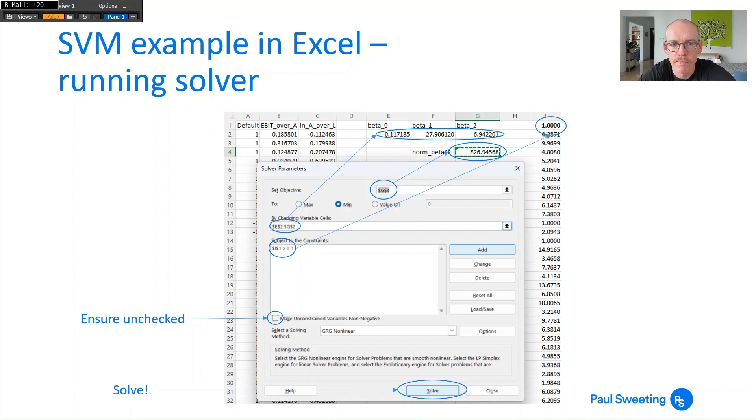Then when you run the solver, what you are trying to do is you are trying to set objective on g4. So you're trying to make g4 as small as possible. So click on min and make sure set objective is referring to g4 by changing cells e2 to g2. So by changing β₀, β₁ and β₂ and subject to constraint that i1, so the lowest value of any of those calculations, is greater than or equal to 1. You also need to make sure that you leave that make unconstrained variables non-negative unchecked. It doesn't necessarily work properly if you don't do that and then just click on solve.